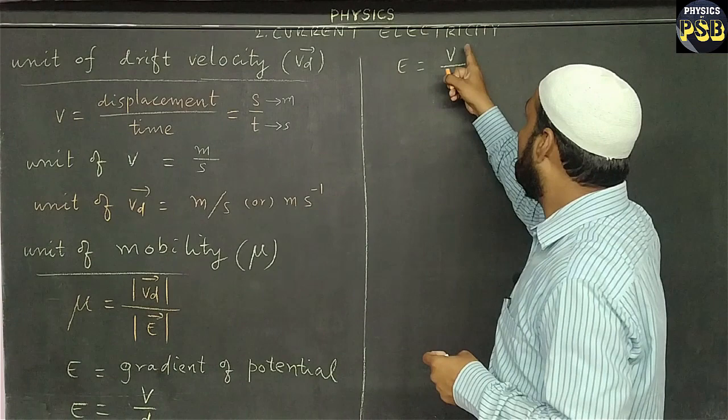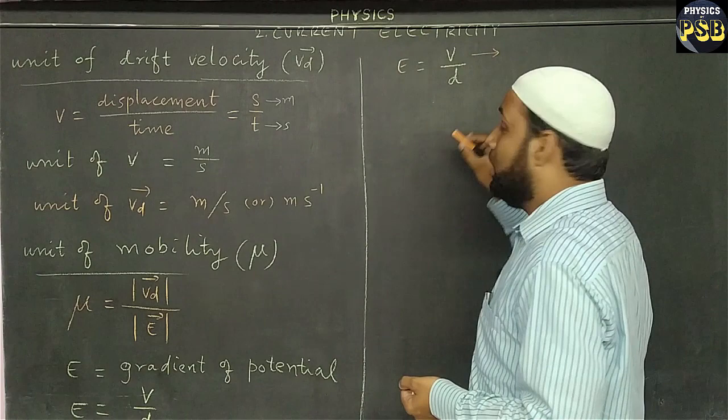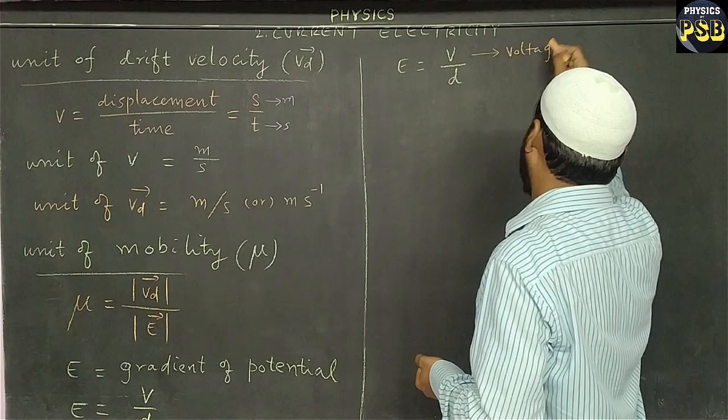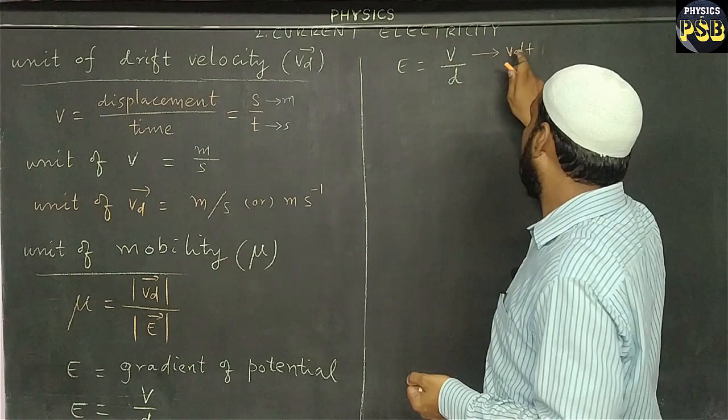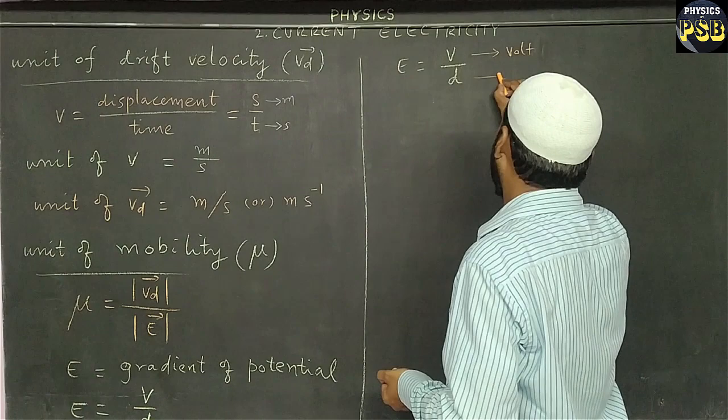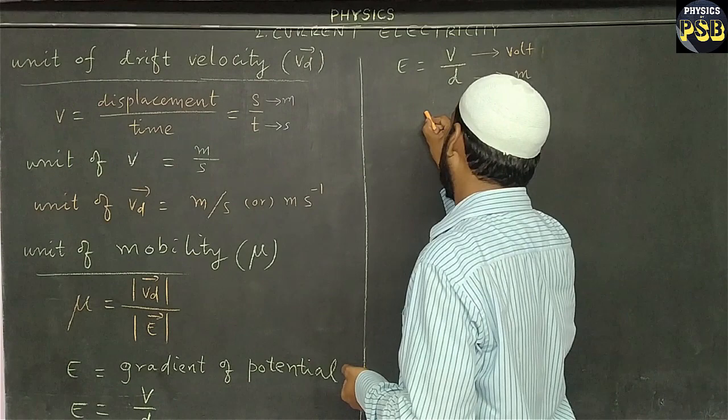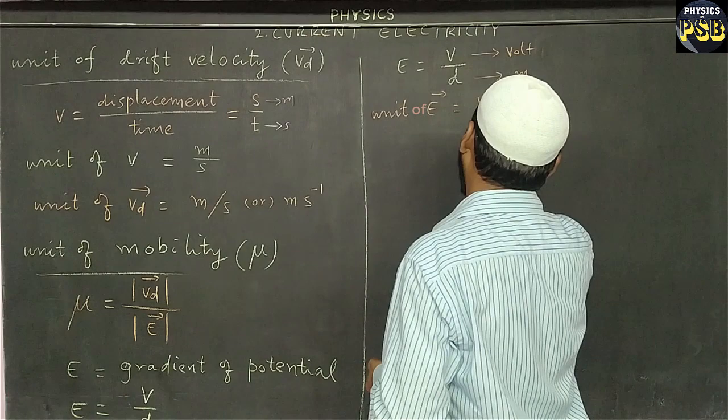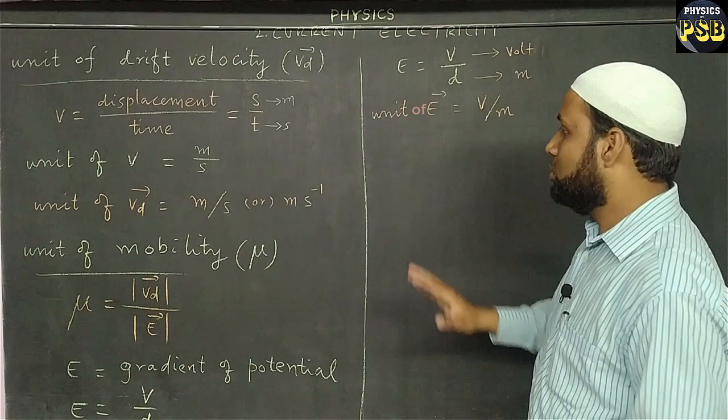The unit of electric potential is volt and distance is measured in meter, so the unit of electric field is volt per meter.